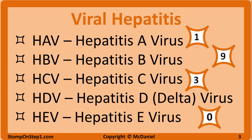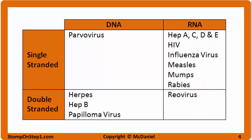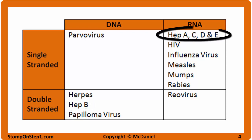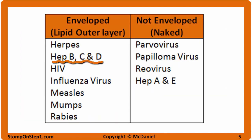The classification system is very low yield so we are not going to focus on it here. I will cover each virus's genome and their envelope. Here is the table from our herpes video that we will be referencing as we go through the rest of the virus videos. Hepatitis B is a double-stranded DNA virus while hepatitis A, C, D, and E are all single-stranded RNA viruses. Hepatitis B, C, and D are enveloped while hepatitis A and E are naked.